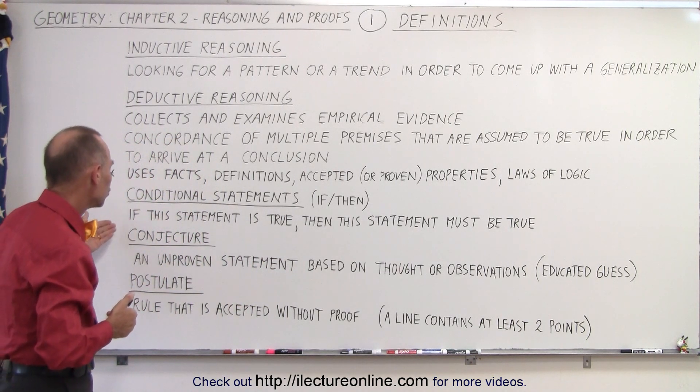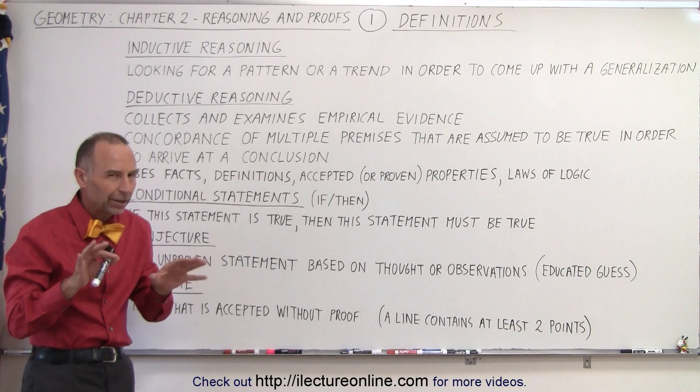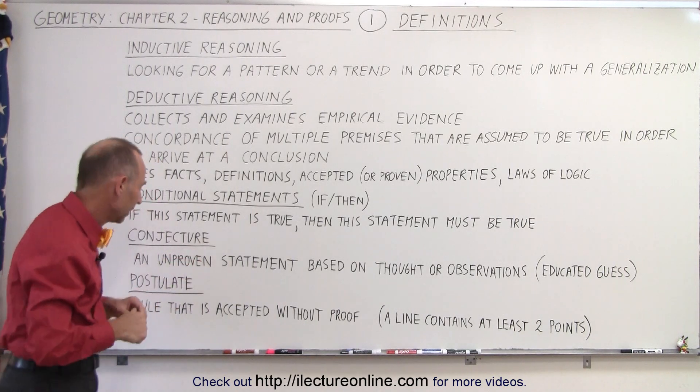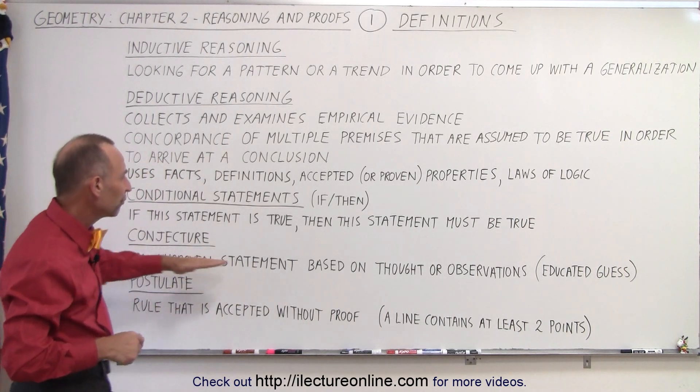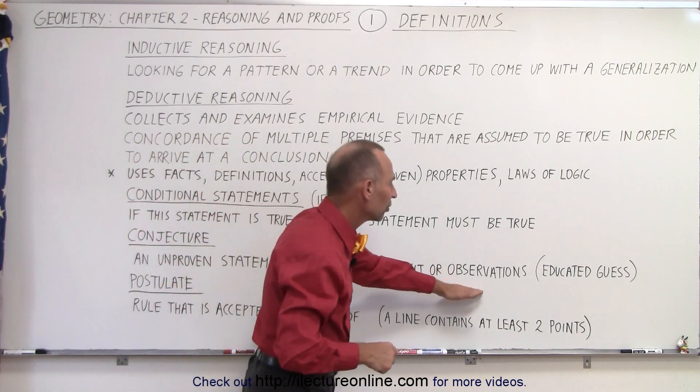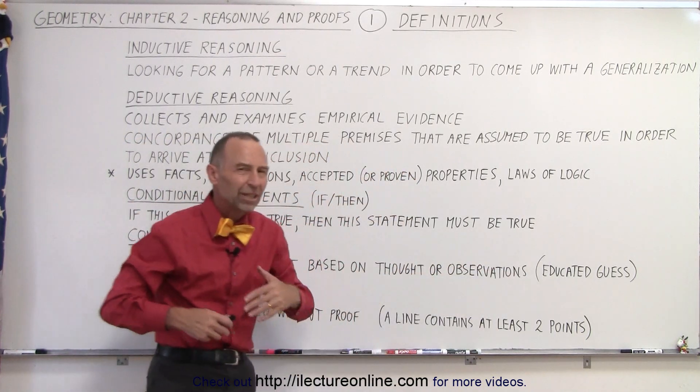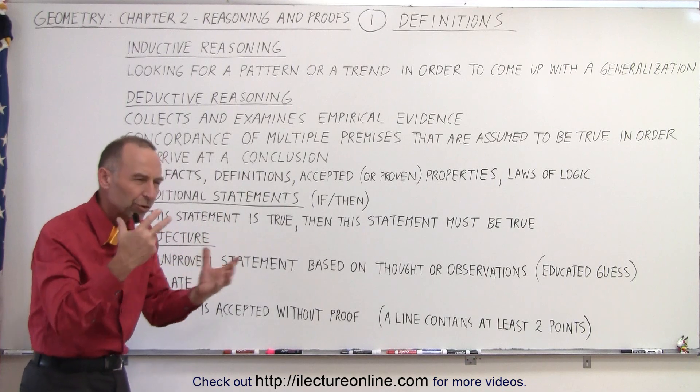Also, we have what we call conjecture. Now, conjecture, you're a little bit more on thin ice, so to speak. A conjecture is an unproven statement based on thought or observation. An educated guess. Give me your best guess based upon what you're thinking.